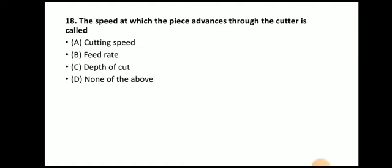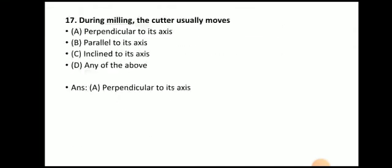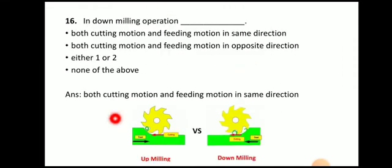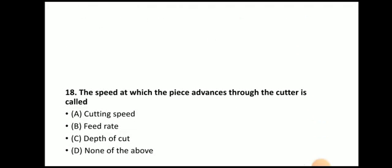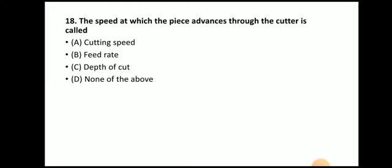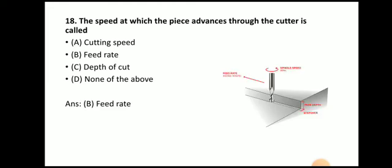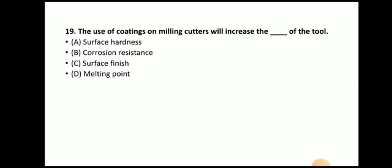Next question: the speed at which the workpiece advances through the cutter is called — cutting speed, feed rate, depth of cut, or none of the above. The answer is feed rate. Here the feed is given to the workpiece (shown in green) and the cutter is shown in yellow. The speed at which the workpiece advances through the cutter is called feed rate.